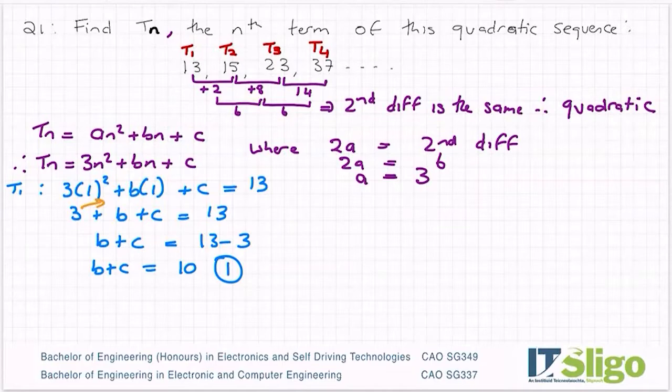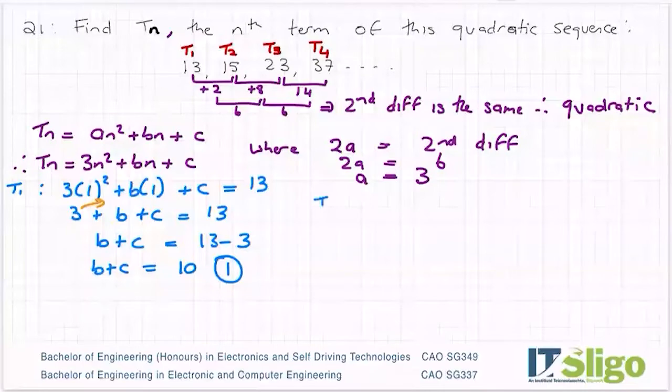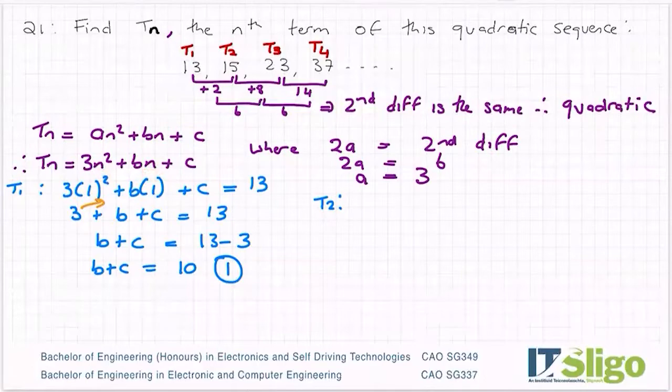Let's work out T2. So in this case, n is being replaced with two. Therefore, I replace n with two in the general term. So three times two squared plus b times two plus c. And of course, my second term is 15.